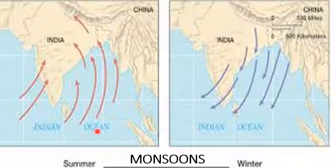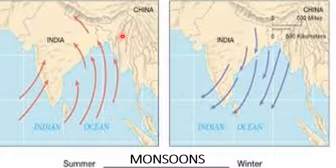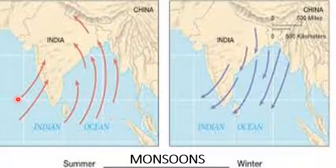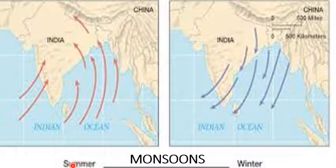During summer, because the sun is on the Tropic of Cancer, there is high temperature on the land and water is cooler. So low temperature on the surrounding water bodies means high pressure. That's why winds blow from sea to land during the summer season.